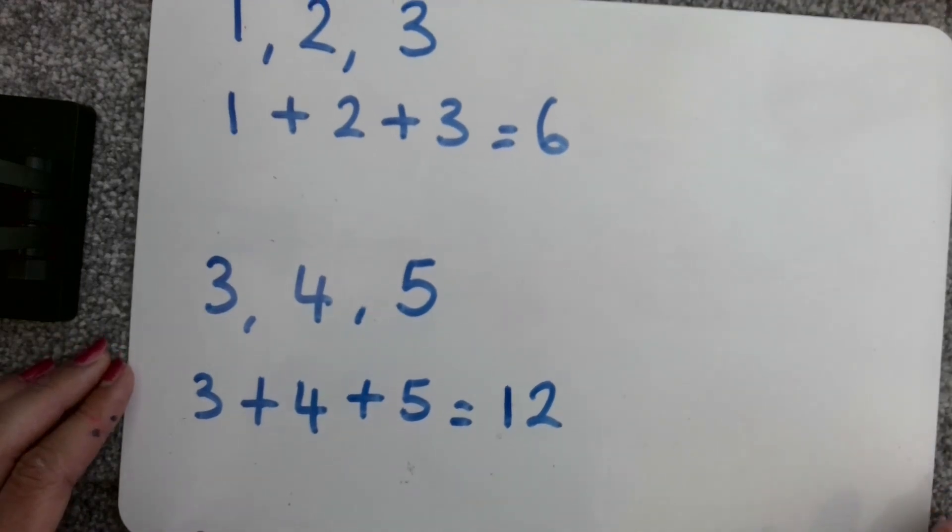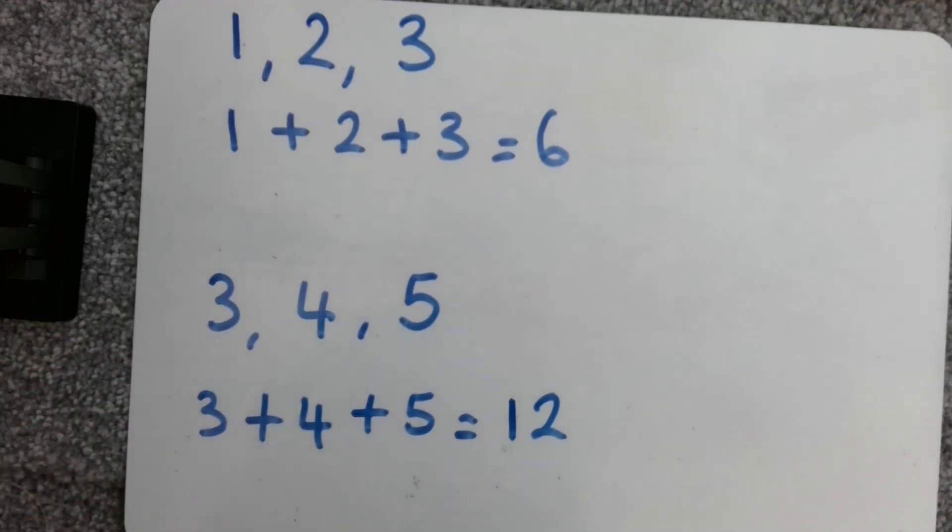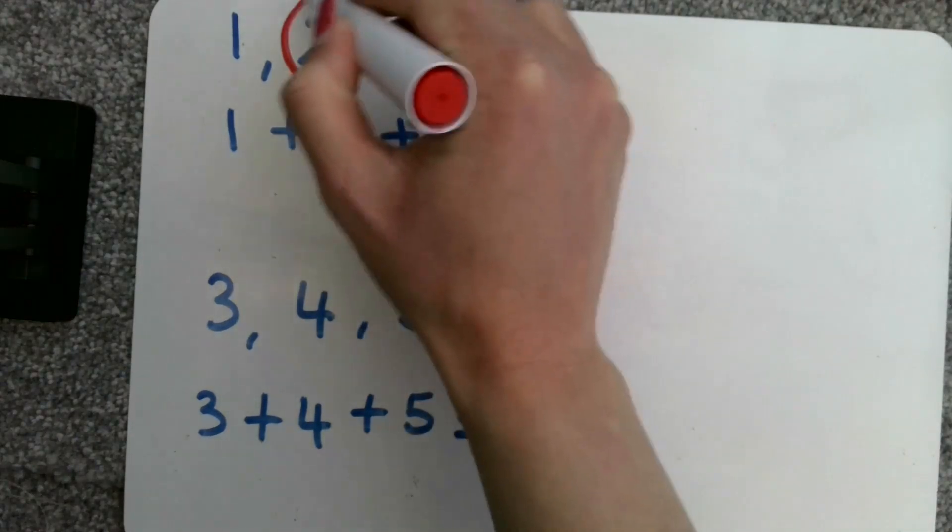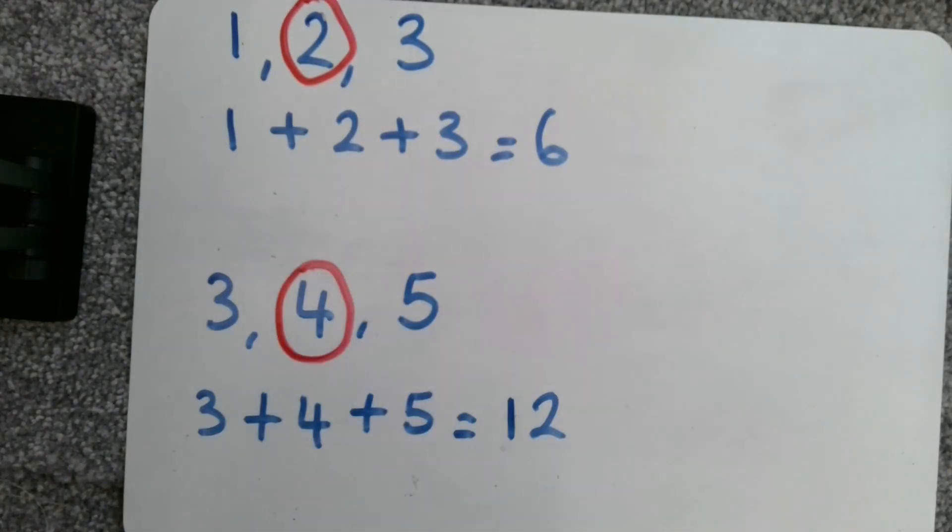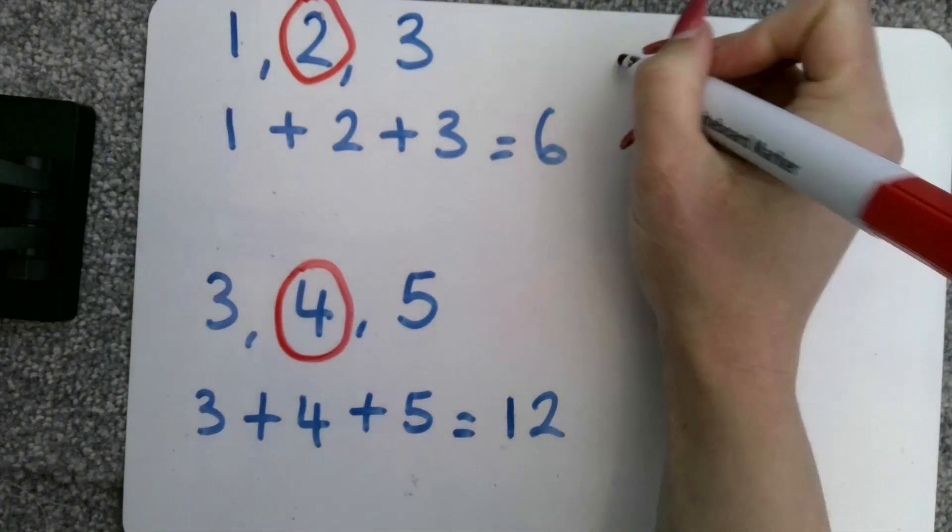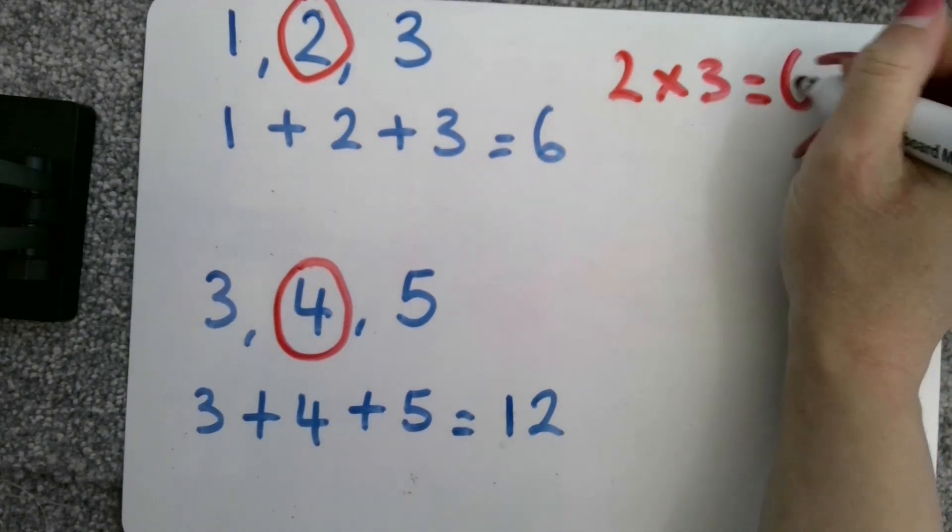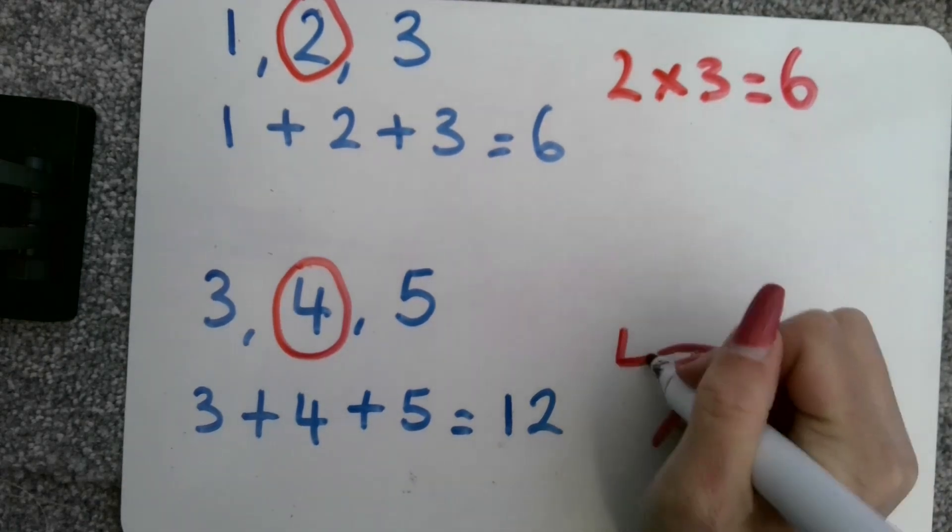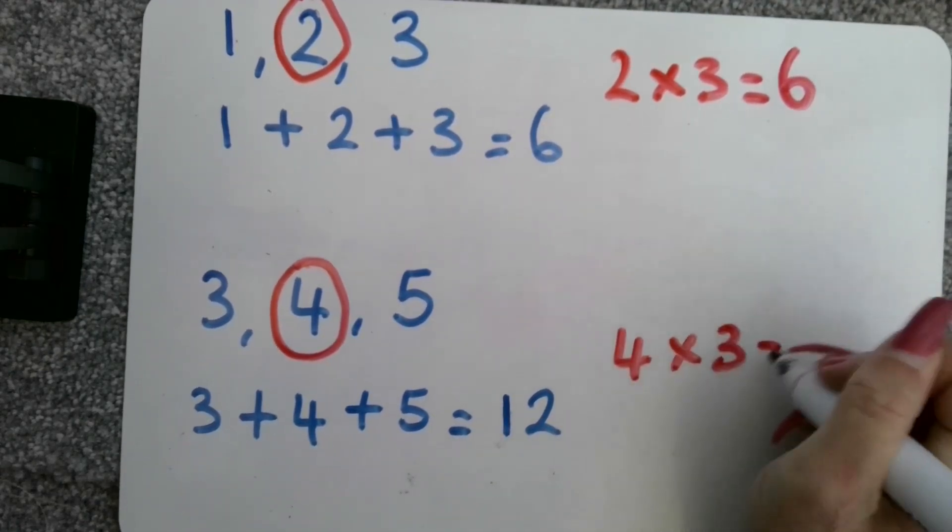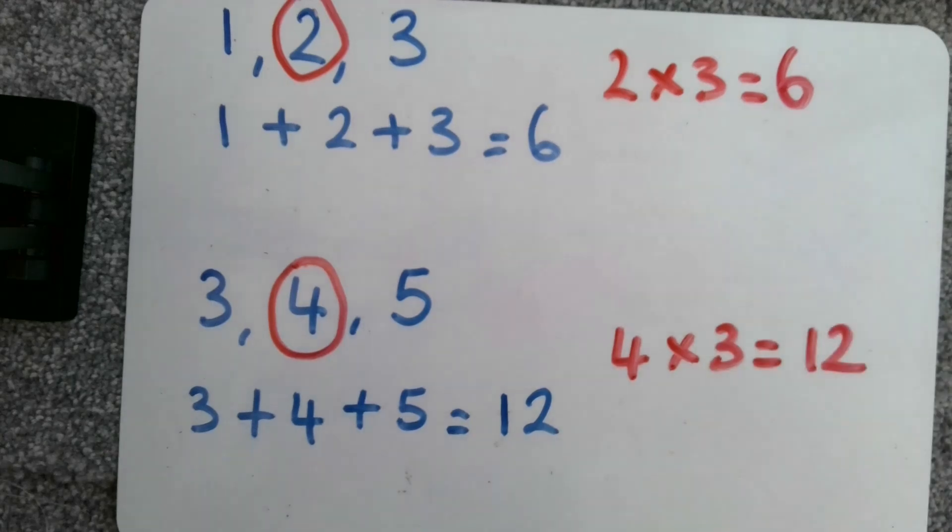It then asked me to multiply my middle number by three. So, two times three is six. Four times three is twelve.